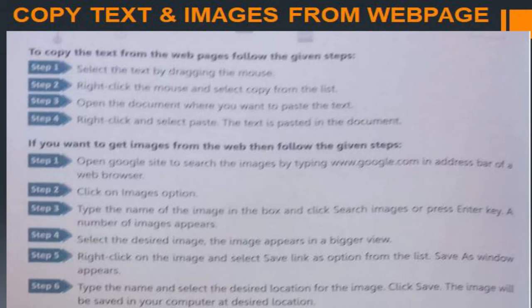To save images from the web: open Google, search for images, and click the Images option. Type the name of the image and press Enter. A number of images will appear. Select the desired image — it appears in a big view. Right-click on it and click 'Save image as.' A dialog box appears; type a name, select the desired location, and click Save.